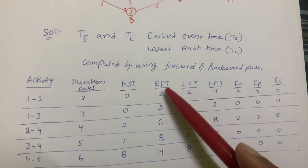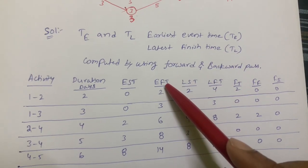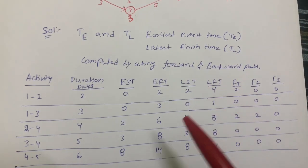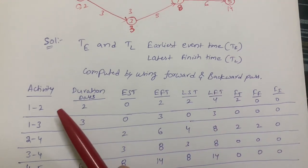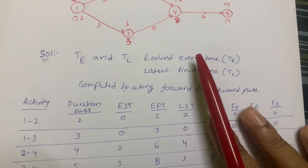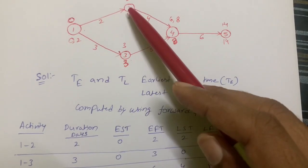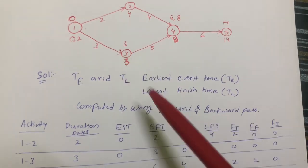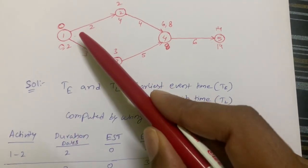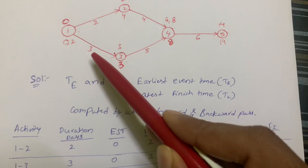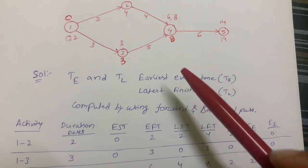First we calculate the earliest finish time (EFT). For activity 1-to-2, the finish time is 2 days. For activity 1-to-3, the finish time is 3 days.